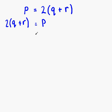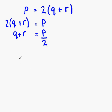We're trying to make q the subject of the formula. The best thing to do now is try and move the 2 onto the other side. The 2 is multiplying the bracket, so if we move it onto the other side it's going to divide the p part. So q plus r will remain on the left, p remains on the right, and 2 comes across to divide. So we have q plus r equals p over 2.